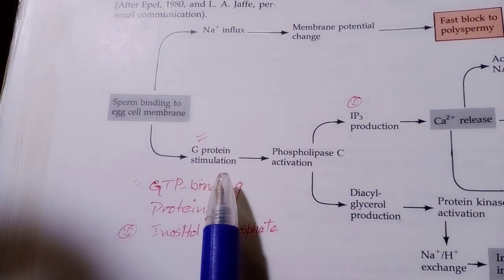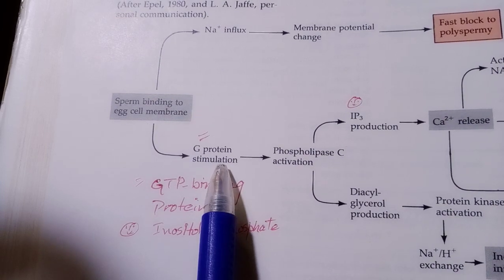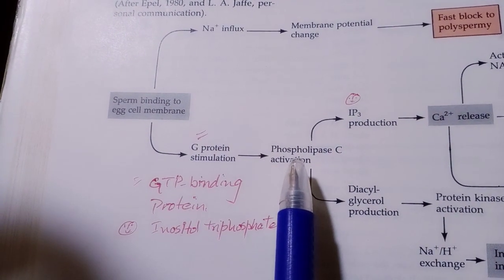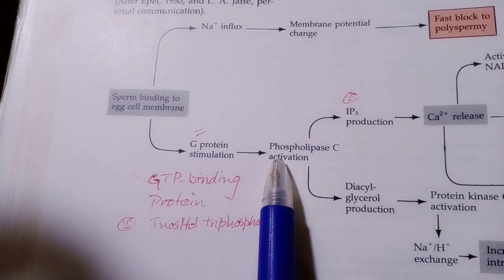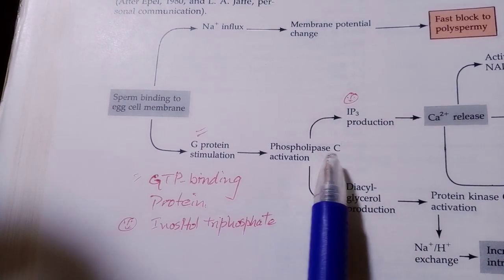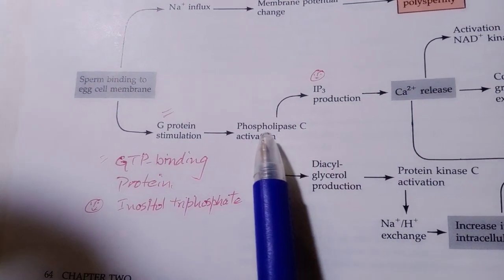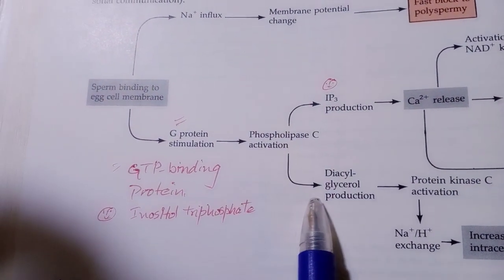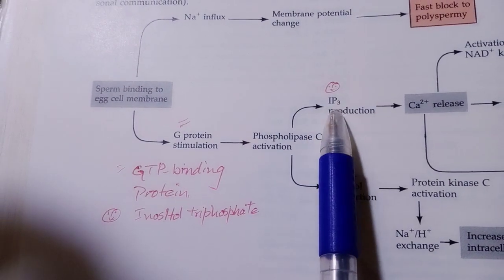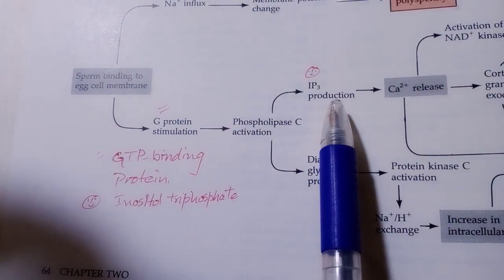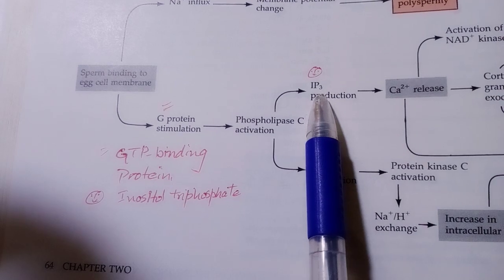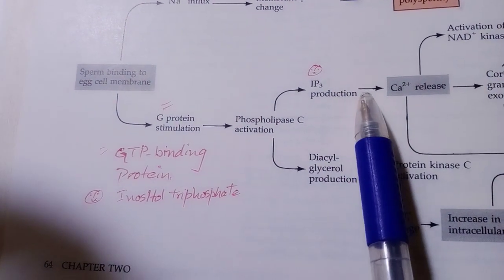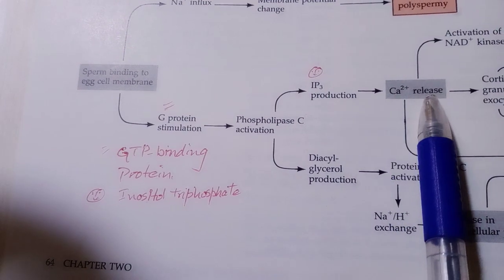Second, the G protein is stimulated and activated. It causes, in turn, the phospholipase C activation. Phospholipase C activation stimulates a two-pronged reaction. One is the production of inositol triphosphate, which causes the release of calcium ions.